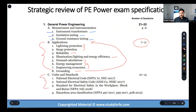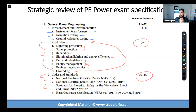Then we get into section C, which is codes and standards. NEC touches every aspect of power systems engineering. It can show up later on in the specification. It can show up even earlier when we're talking about grounding. So it's all over the place.